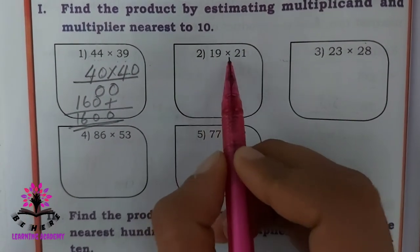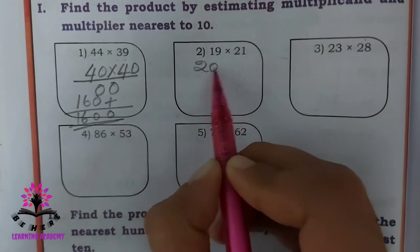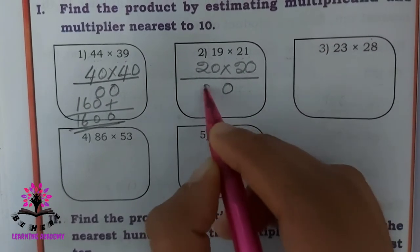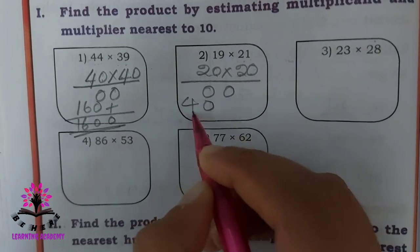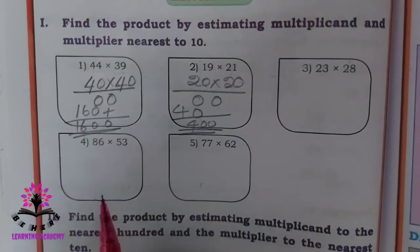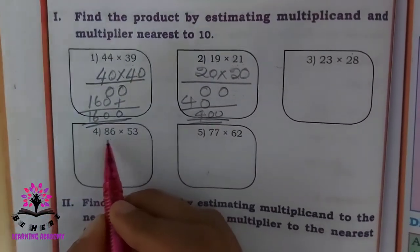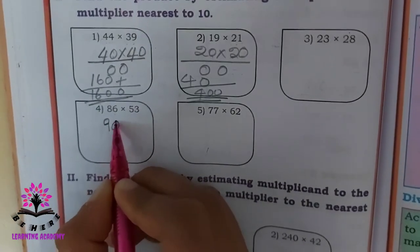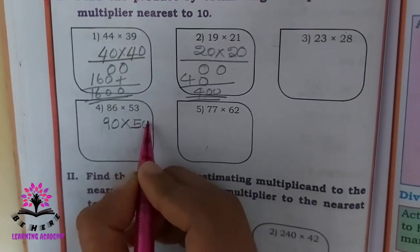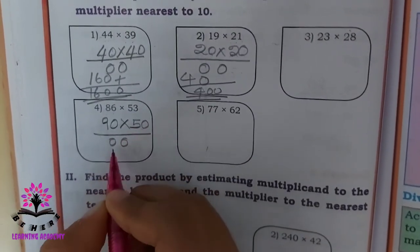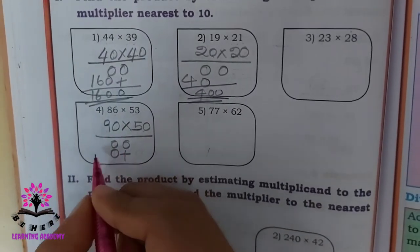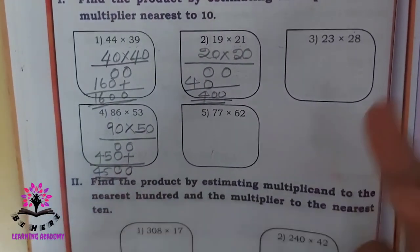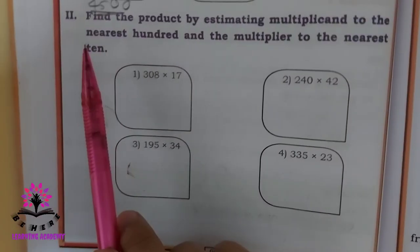The second one is 19 into 21. The nearest value to 19 is 20, and the nearest value to 21 is also 20. So 20 times 20 equals 400. For 86 into 53: nearest value to 86 is 90, and nearest value to 53 is 50. So 90 times 50 equals 4500. The remaining two problems you solve by yourself.